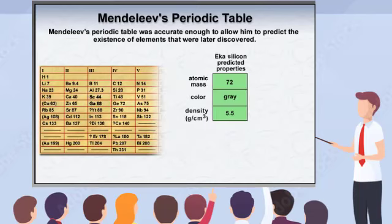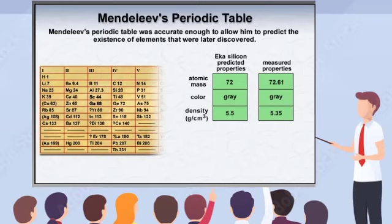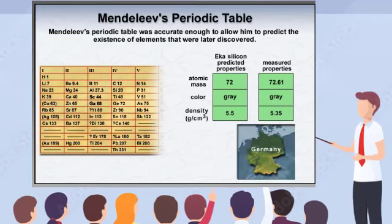On the screen, you'll notice some of the predicted properties of an element he called eka-silicon. In 1886, an element that closely fit his description was discovered in Germany. The element, which was named germanium instead of eka-silicon, showed that Mendeleev's predictions were correct.